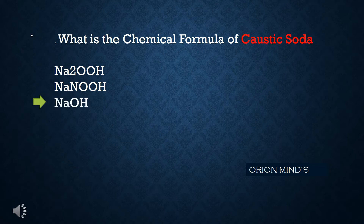What is the chemical formula of caustic soda? The answer is NaOH.